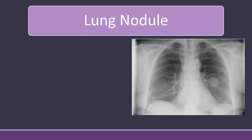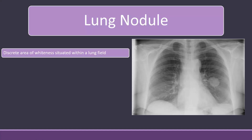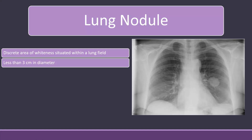So what is a lung nodule? A lung nodule is a discrete area of brightness situated within a lung field. It should not be attached to any structure. It should not be attached to the pleura. It should not be associated with any collapse or any pleural effusion. It is a discrete structure and it should be less than three centimeters in diameter.